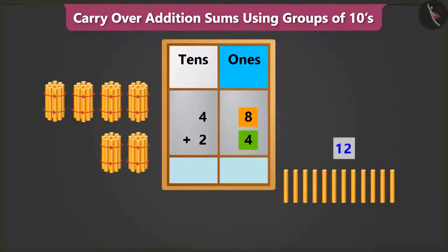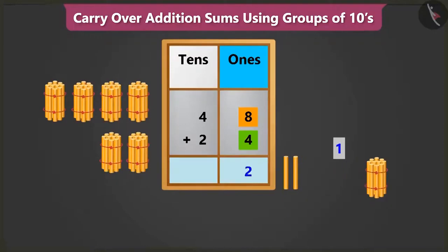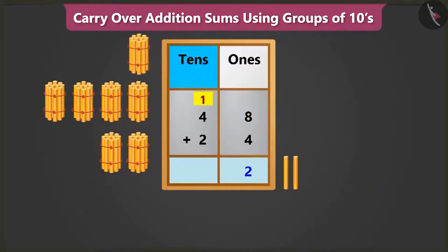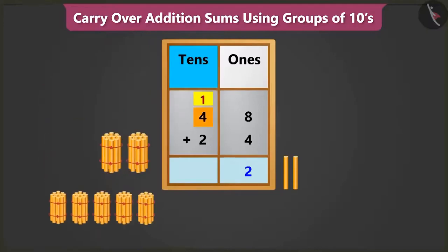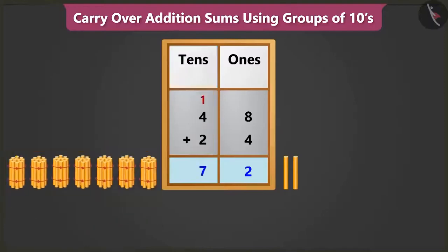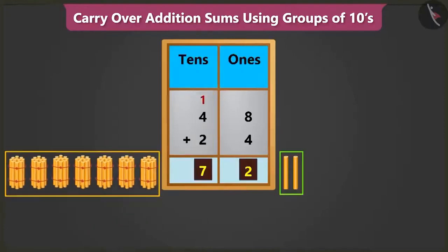From 12 ones, we will write 2 in the ones box and carry over 1 ten in the tens box. Now, when we add 1 and 4, we get 5, and adding 5 and 2, we get 7. Now, 7 tens added to 2 ones makes 72. So we have to pay 72 rupees.